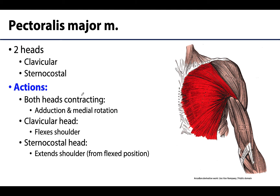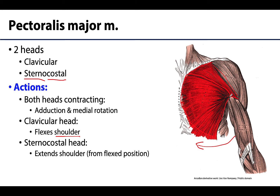Pectoralis major is located in the breast region, just deep to the breast. You will have two heads: the clavicular head, attaching on the clavicle, and the larger fan-shaped sternocostal head, attaching on the sternum and costal cartilages. Both heads come together in a common tendon attaching on the humerus. When both heads contract, this muscle causes adduction of the arm and medial rotation.